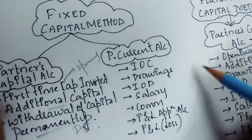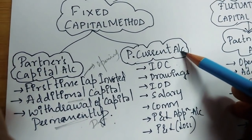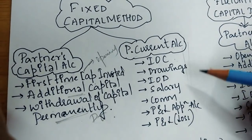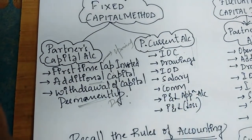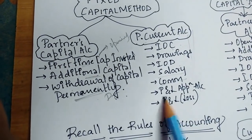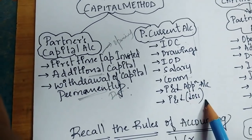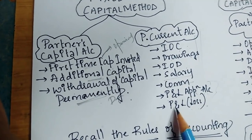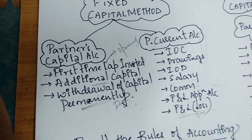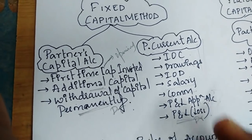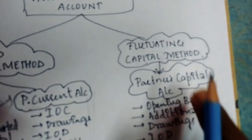Under the fixed capital method, fluctuating items are recorded in the partner's current account. These include: interest on capital (IOC), drawings, interest on drawings, salary, commission, and the share of profit or loss from the P&L appropriation account. I will explain in detail in the format why each item is debited or credited.